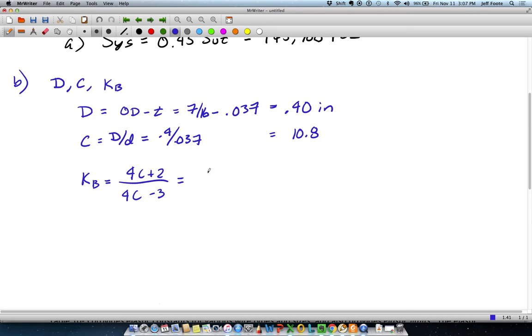Finally, our shear stress for this is kb times 8FD, where F is the force corresponding to that shear strength, over pi times wire diameter cubed. If I want the force corresponding to the yield strength itself with no factor of safety in there, I'm going to set this equal to the actual yield strength that we calculated in part a.